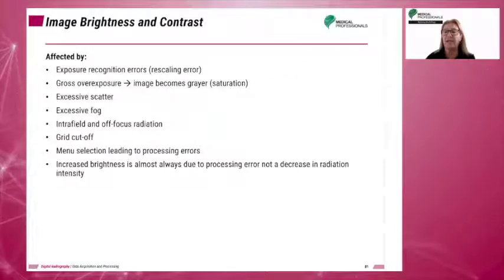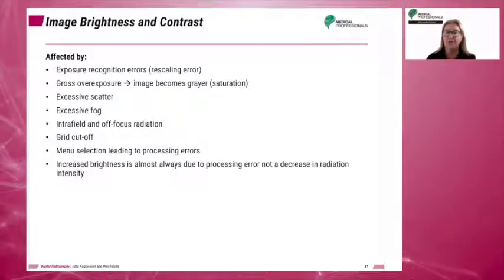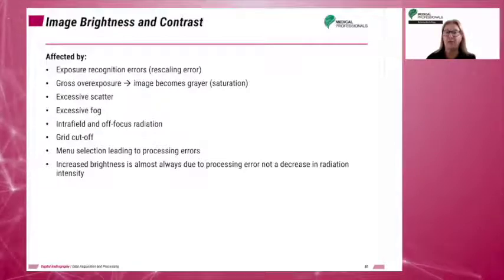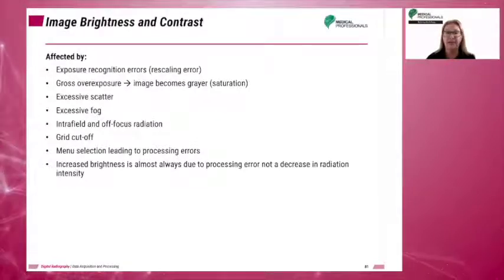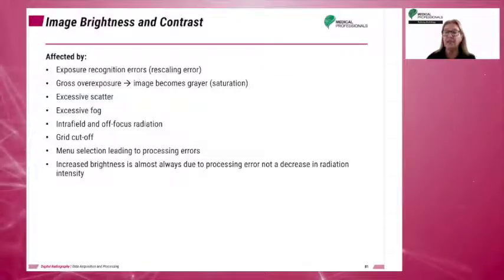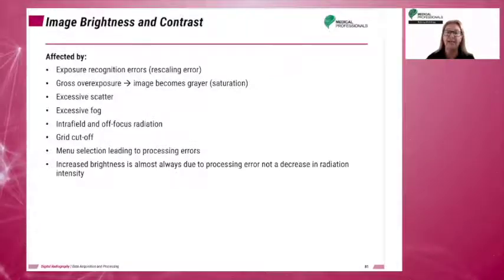Display image brightness and contrast can also be affected by the following factors: exposure recognition errors (also termed rescaling errors), gross overexposure in which the image becomes grayer (known as saturation), excessive scatter, excessive fog, intra-field and off-focus radiation, grid cutoff, and manually increased brightness — which is almost always due to a decrease in radiation intensity rather than an actual improvement.